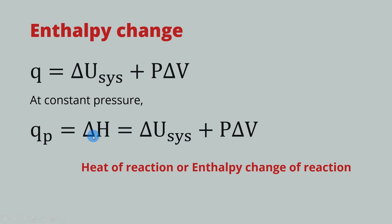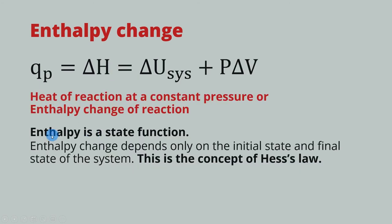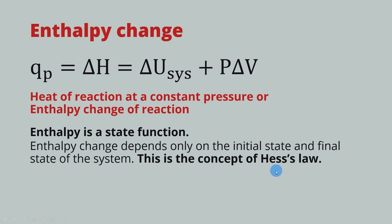The important thing about enthalpy change is that it is a state function. This means that the enthalpy change depends only on the initial state and final state of the system — it depends only on the type of reactants and products in the chemical reaction. If you look at chemical reactions that have the same reactants and the same products, the enthalpy change must be the same regardless of how many steps it takes to reach the final product. This is the concept of Hess's Law, which we will look at later in this video.